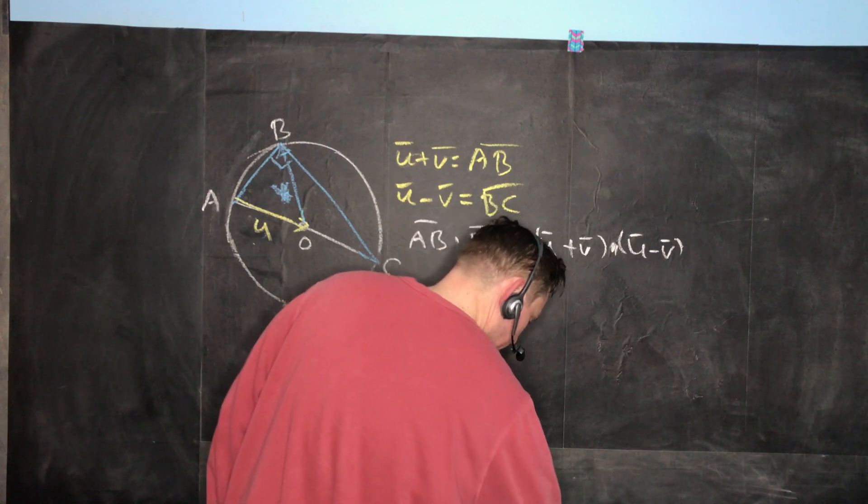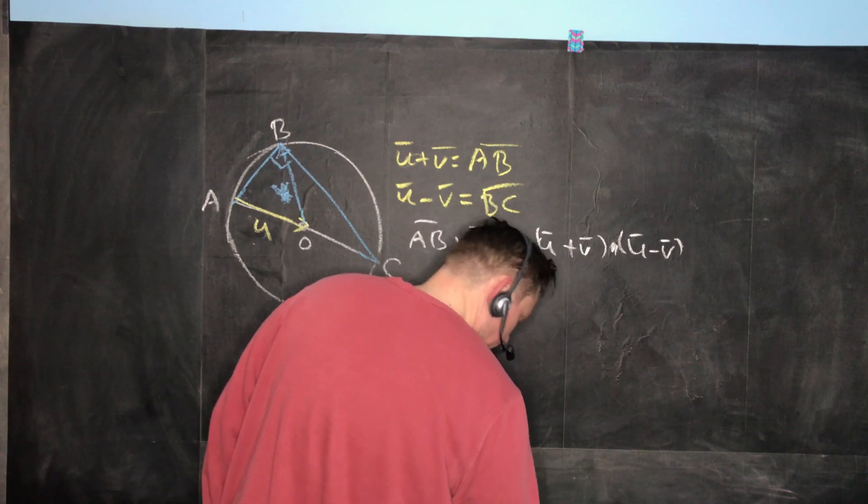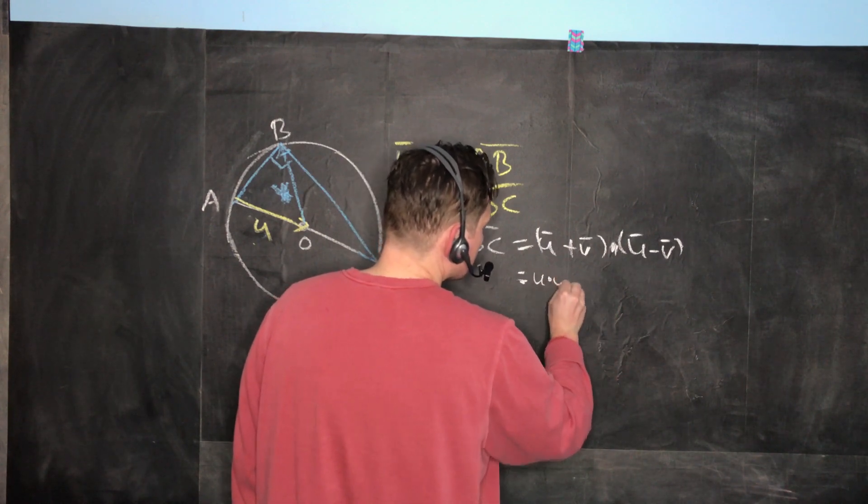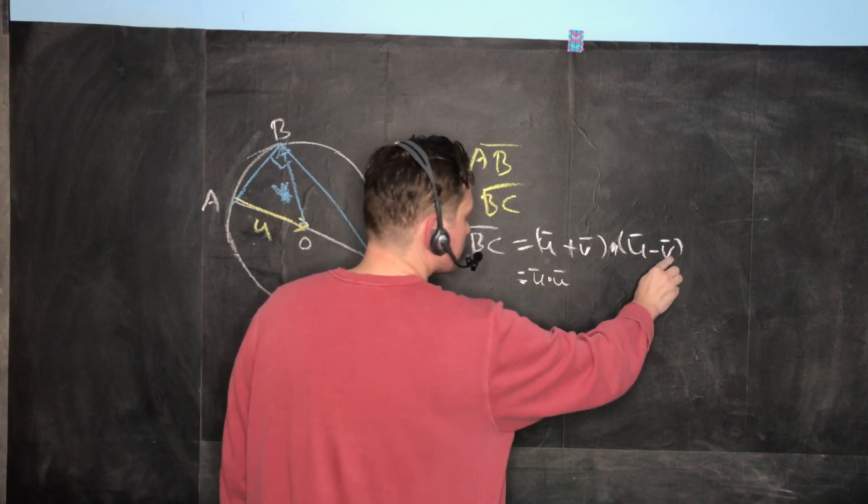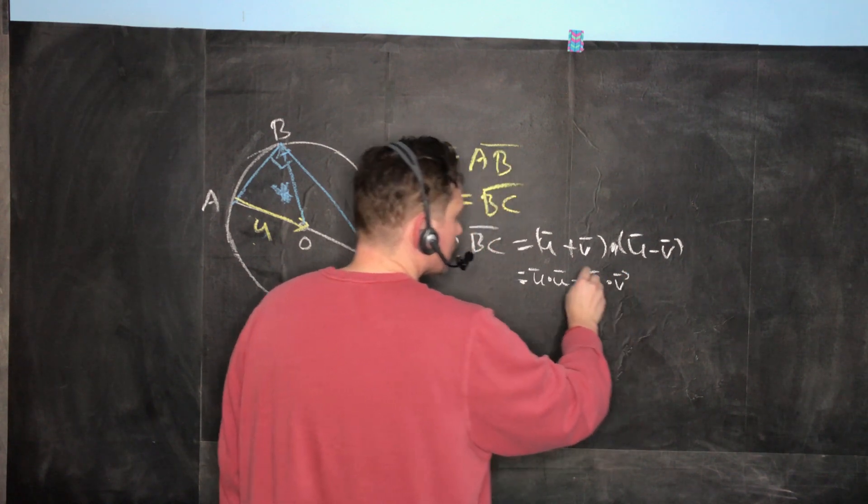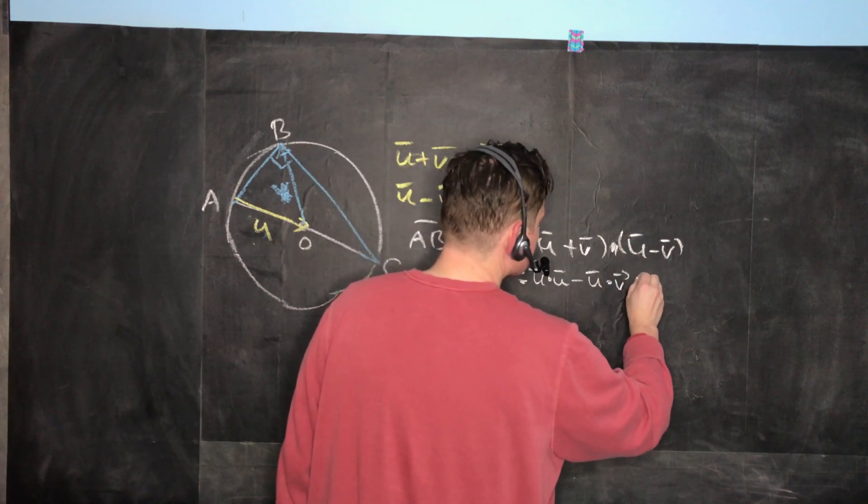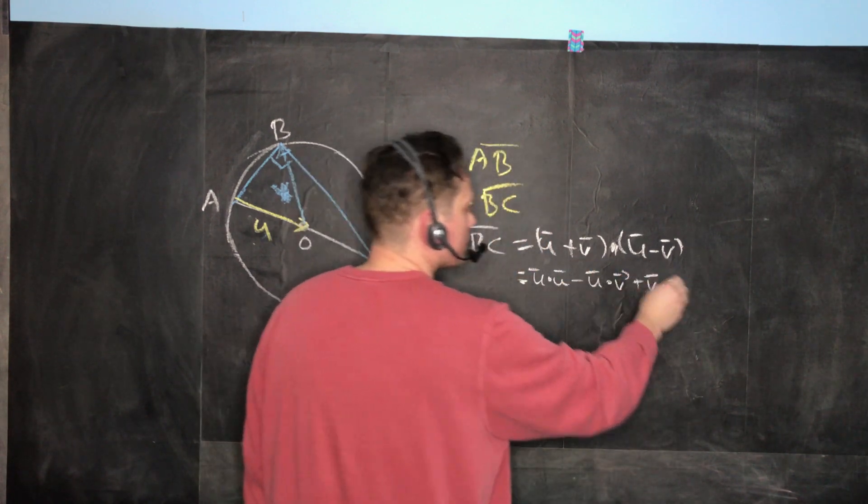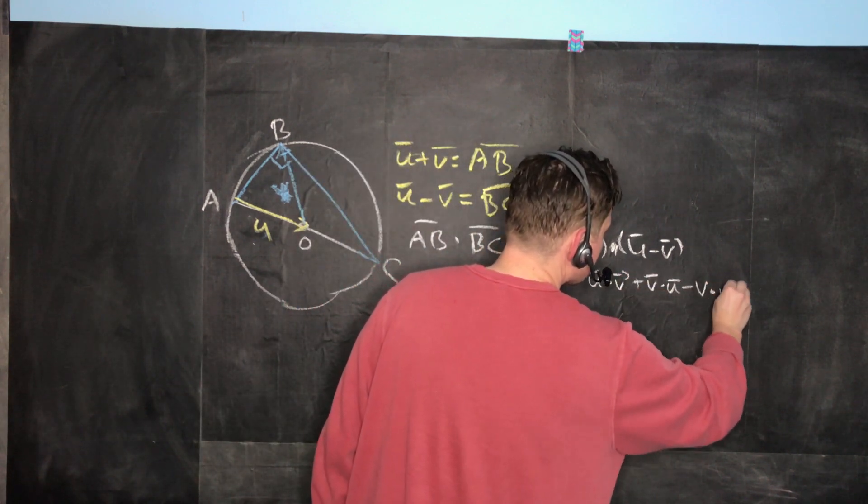And then we apply the basic properties of dot products. Let me switch maybe to a thinner piece of chalk so it fits a bit better. So it's going to be U dotted with U, and then U dotted with negative V, so minus U dotted with V. And then V dotted with U, so plus V dotted with U. And then V dotted with negative V, so minus V dotted with V.